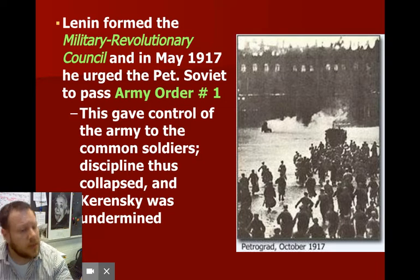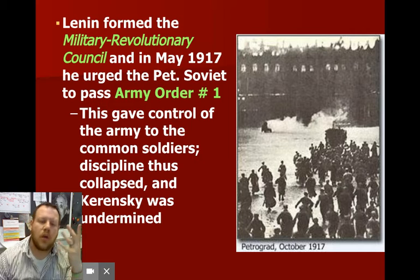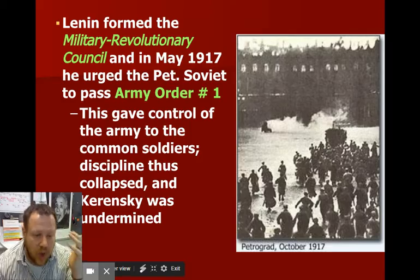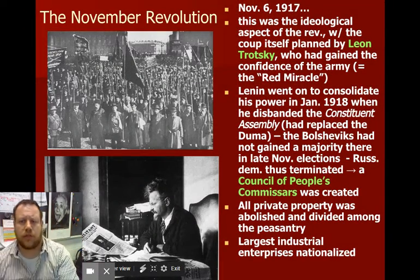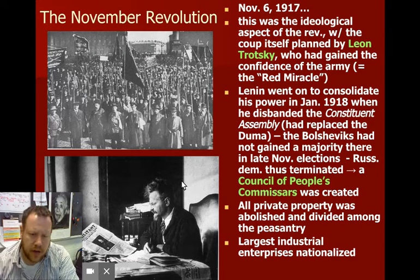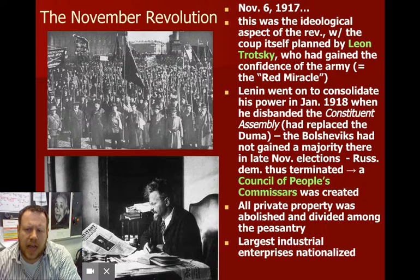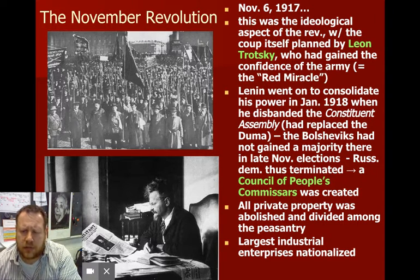Kerensky, as leader, was now undermined with no military control. The army was in chaos because you have to have some kind of chain of command, which was now gone. Then November arrives and the big ideological revolution happens. Leon Trotsky — the guy with the awesome goatee and glasses — was the one who planned the whole thing. He got the confidence of the Red Army and was really the leader of this whole operation.